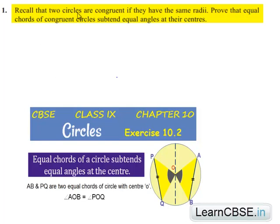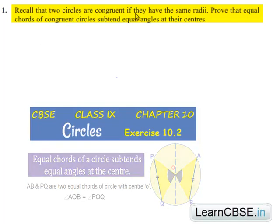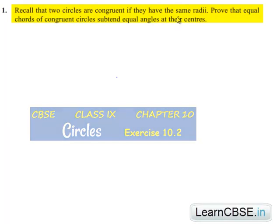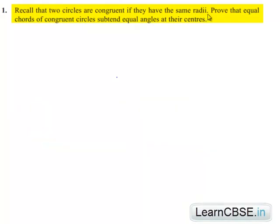Moving on to question number 1. Recall that two circles are congruent if they have the same radii. Prove that equal chords of congruent circles subtend equal angles at their centers.